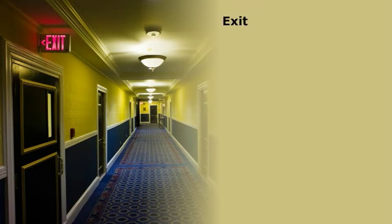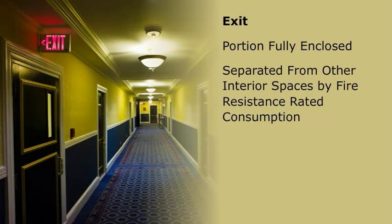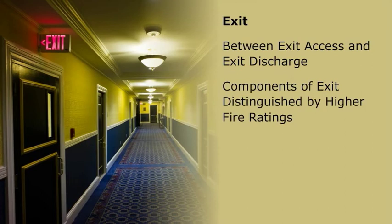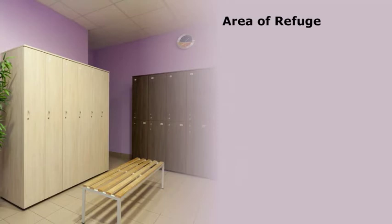The second component of a means of egress is the exit. The exit is the portion of a means of egress that is fully enclosed and separated from other interior spaces by fire-resistance rated construction, and is between the exit access and the exit discharge or public way. It can be as basic as the exterior exit door, or it can include enclosed stairwells and ramps. In some special cases, it can include certain corridors or passageways. The components of an exit are distinguished from the exit access by higher fire ratings.